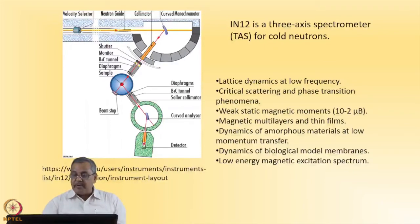Similarly, IN12 is another triple axis spectrometer for cold neutrons. We can do lattice dynamics at low frequencies or low energies. When I have cold neutrons, that means typically the energies are in the range of less than or below 5 meV and wavelength is more than 4 angstrom. Such an instrument needs a cold neutron source installed at the reactor, and that's why this is an added advantage here.